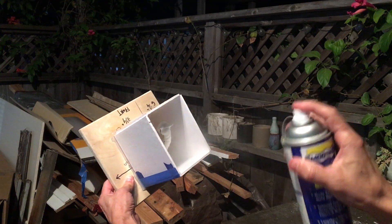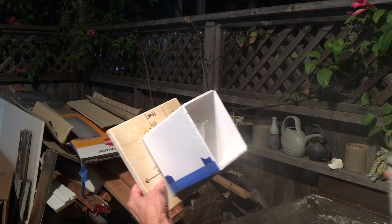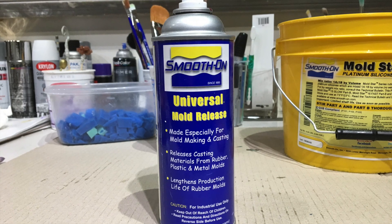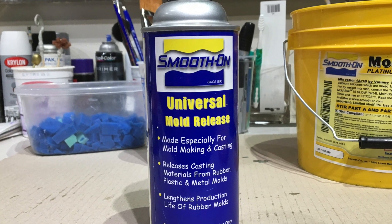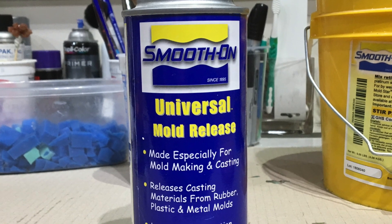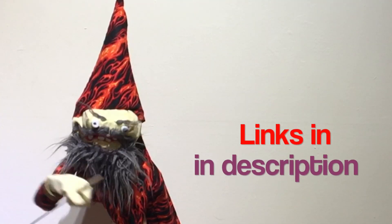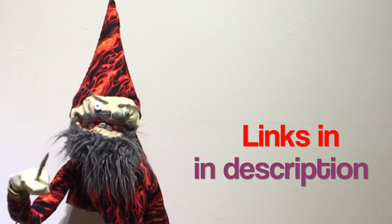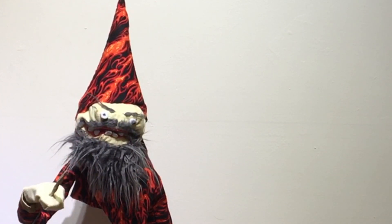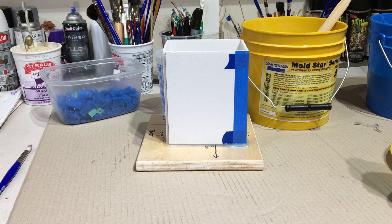Before I start mixing the silicone, I'll give the box and sculpture a really light spray with this Smooth-On Universal Mold Release. This will just help everything pop off the silicone a little bit when you pull all this stuff apart.